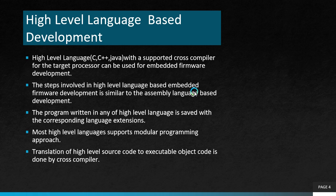The steps involved in high level language based embedded firmware development are similar to assembly language based development, except there is a difference in that in high level language based development, we will be using a cross compiler for conversion of source file to object file, whereas the conversion of source file to object file in assembly language will be done by an assembler.